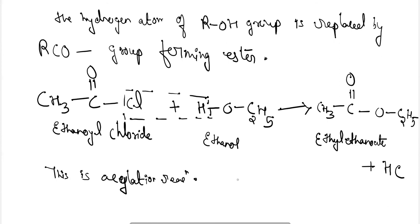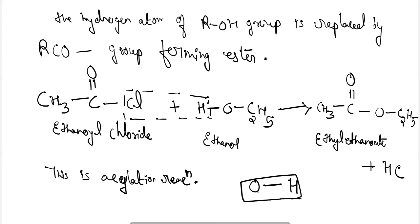If the acid halide or anhydride used is acetyl chloride or acetic anhydride, the reaction is called acetylation. But when acyl chloride is used, it is termed as acylation reaction. These were the reactions involving the breaking of the bond between oxygen and hydrogen. In the next class, we will see the reactions of alcohols where the carbon-oxygen bond breaks. Thank you.